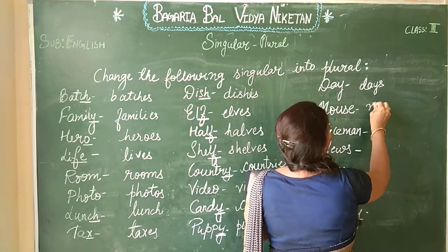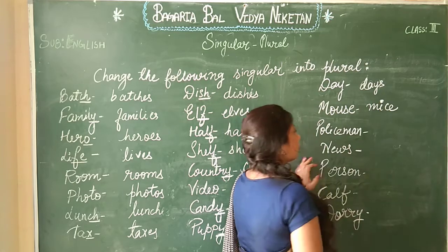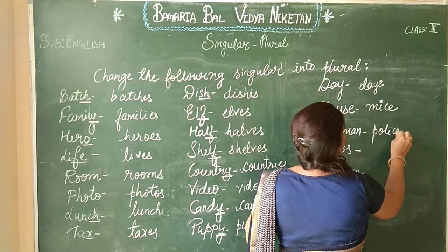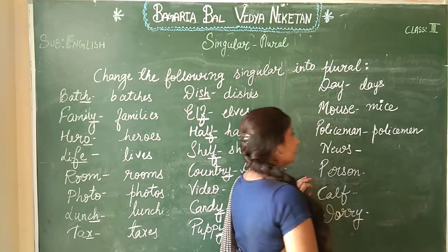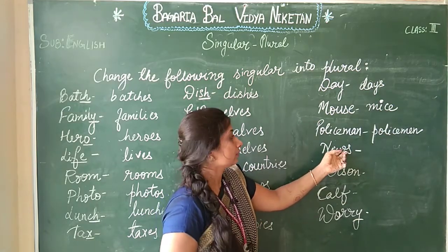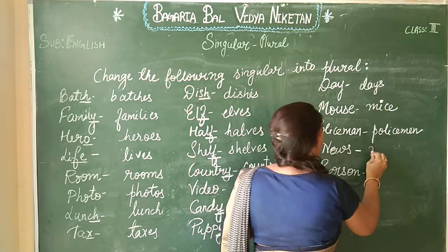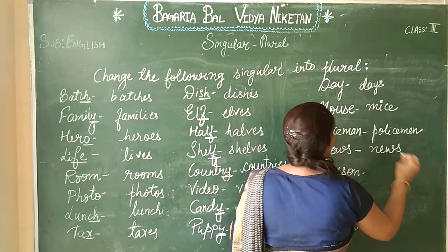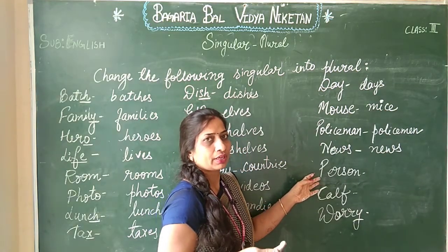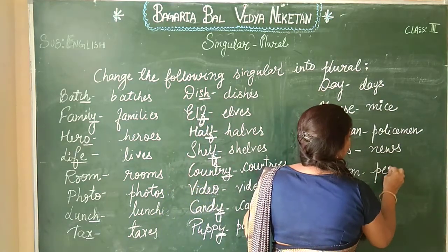Next: 'mouse'. Here the spelling will be changed to 'mice'. Next: 'policeman'. Next: 'news'. The spelling does not change, so news remains 'news'. Next: 'person'. Person means one person — ek insaan. It will become 'people', which means many people.